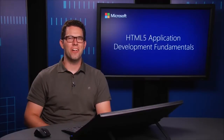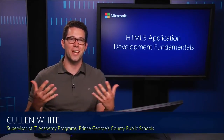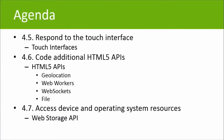Hi, I'm Cullen. Welcome back to HTML5 Application Development Fundamentals. We're going to get started with Module 10, our final module. Without further ado, let's start talking about coding for the touch interface. Today we're going to talk about how to respond to the touch interface and touch interfaces in general. We're also going to touch on objective 4.6 — coding additional HTML5 APIs. We've got four that we're going to talk about: geolocation, web workers, web sockets, and the file API. And we're also going to touch on web storage again — local storage and session storage.